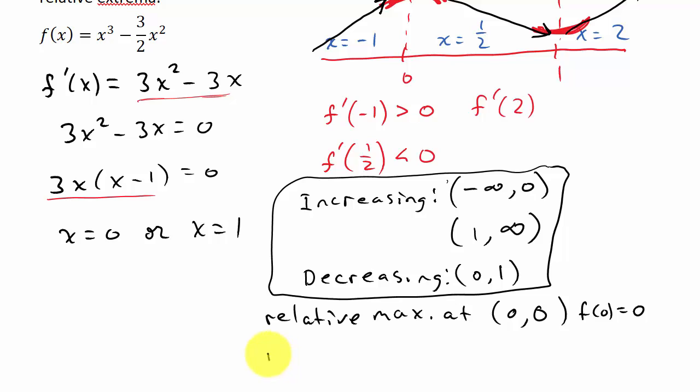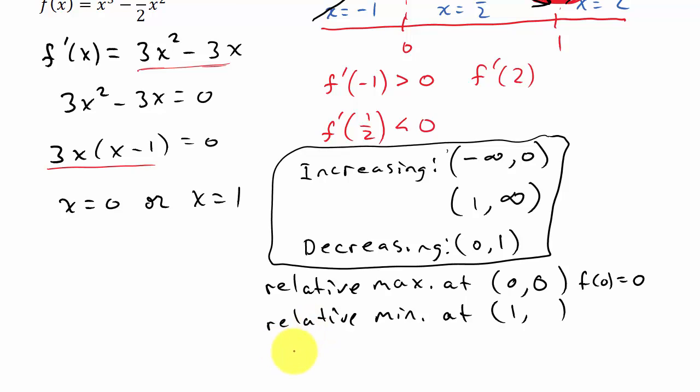And then I have a relative minimum at x = 1. And then to find my y value, I take the one and plug it back into the function. So f(1) would be 1³ - 3/2 times 1², which that's just 1 - 3/2, and that's going to leave me with -1/2. And so we have a relative min at -1/2.